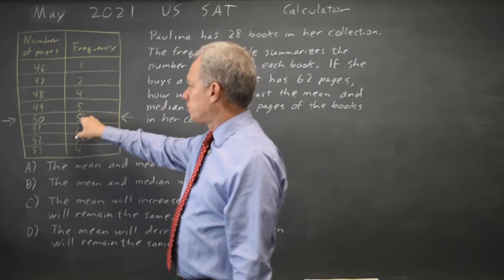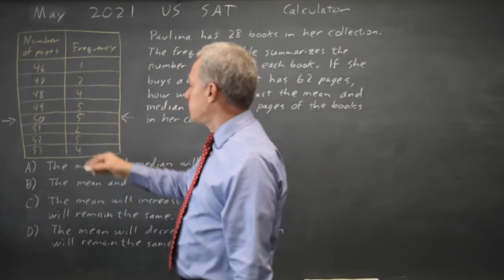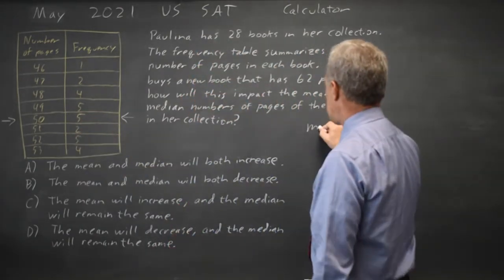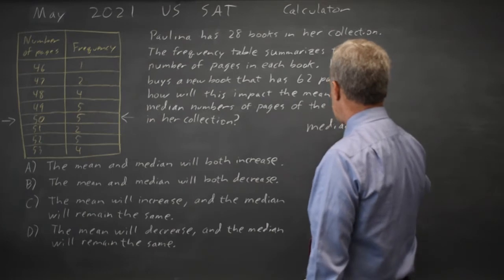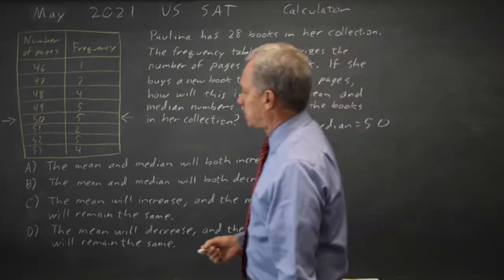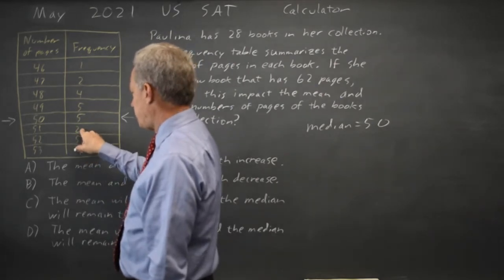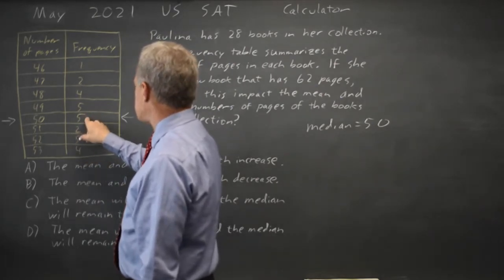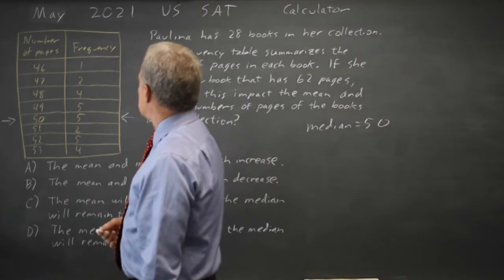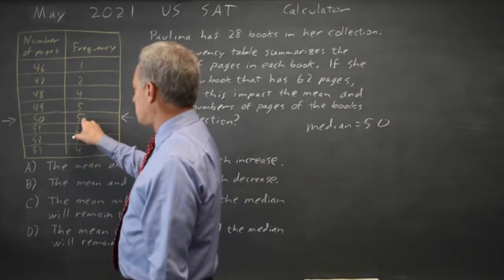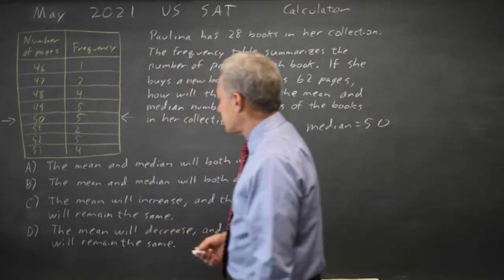The 14th and 15th books both have 50 pages, so the median is 50. Let's count the other direction to make sure I didn't mess up. 5 and 4 is 9, plus 2 is 11, plus 5 is 16. The 14th and 15th book from the top are also 50, so I counted that correctly.